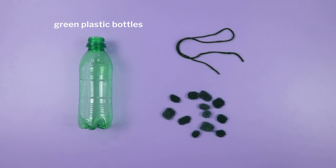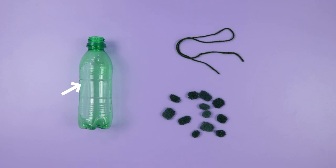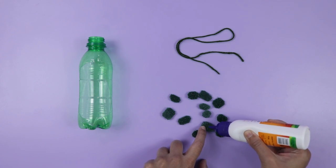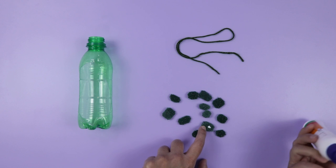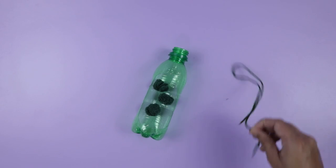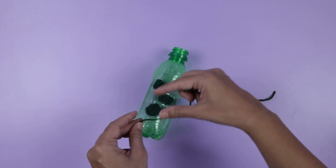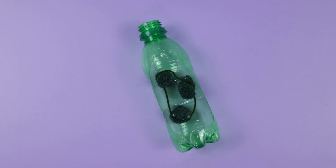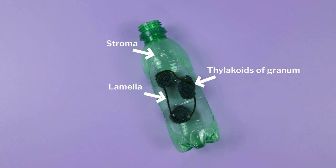I used green plastic bottles, dishwashing scrubbers, and woolen threads. Cut the green colored bottle from the side to create a wide opening. Cut the scrubbers into small round discs and stack them over one another to make the thylakoid of the granum. Woolen threads can be connected to the thylakoid to act as lamellae. Students can label all the parts of the chloroplast using paper tags or by writing on chart paper. We can discuss the function of stroma, thylakoid and chloroplast using other analogies and examples as well.